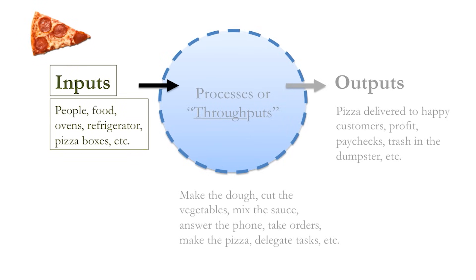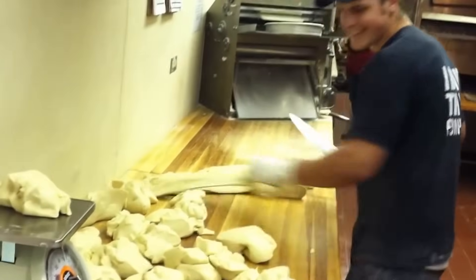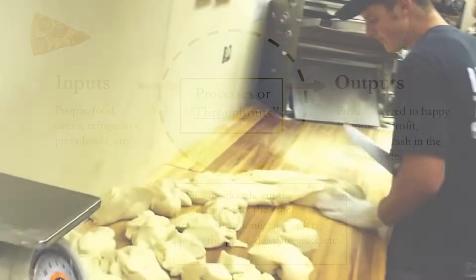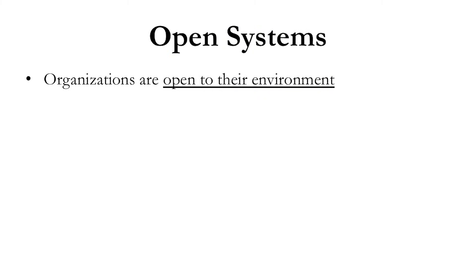A typical pizza place, for example, has inputs you might expect: the people doing the work, the food, the ovens, the refrigerator, pizza boxes, and all other materials. Then you have your processes or throughputs where you make the dough, cut the vegetables, mix the sauce, answer the phones, take the orders, make the pizza, and delegate tasks — lots of work in a pizza place. And then you have outputs, which are hopefully pizza delivered to happy customers, a profit for the shop, good paychecks for employees, and also the trash and waste material — those are also considered outputs of a system.